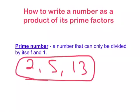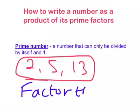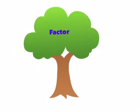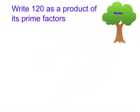To write a number as a product of its prime factors, we need to draw something called a factor tree. This here is not a factor tree, but we'll draw something similar to it.